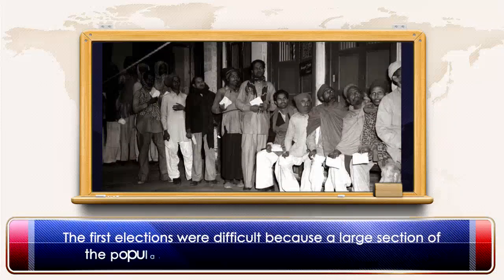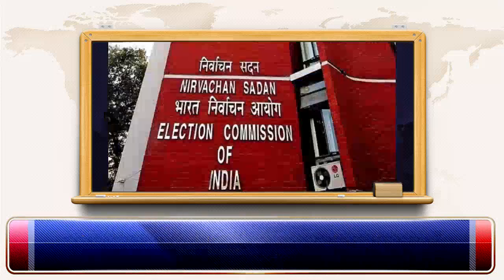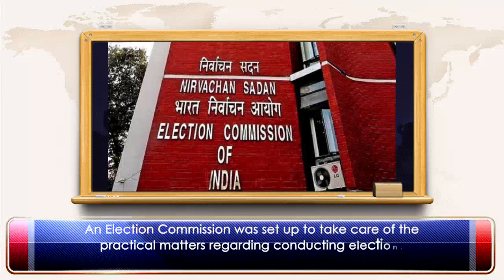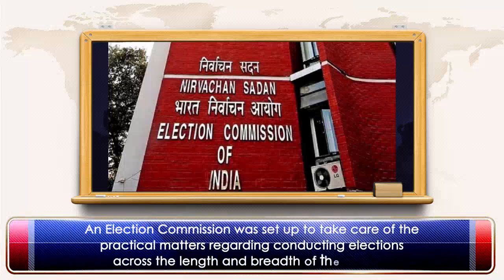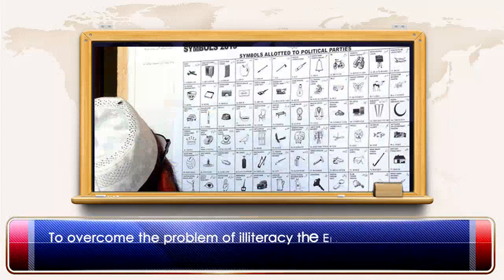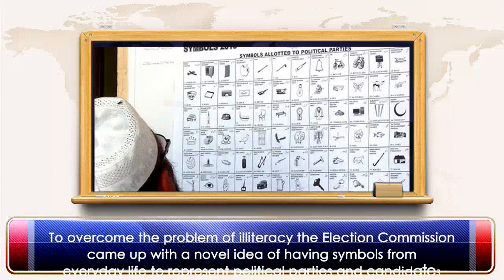The first elections were difficult because a large section of the population did not know how to read and write. An Election Commission was set up to take care of the practical matters regarding conducting elections across the length and breadth of the country. To overcome the problem of illiteracy, the Election Commission came up with a novel idea of having symbols from everyday life to represent political parties and candidates.